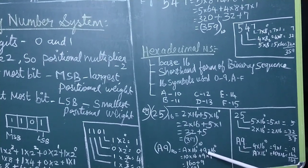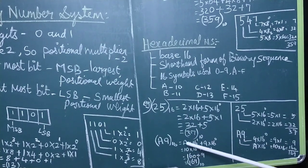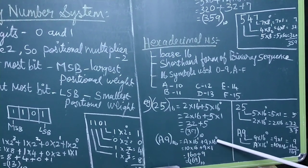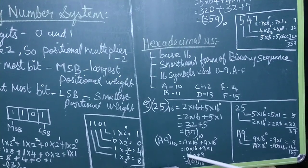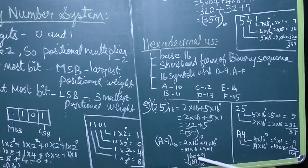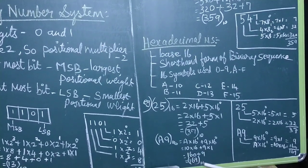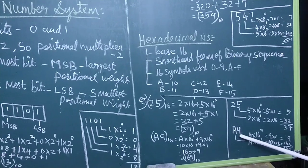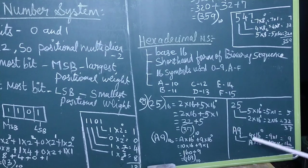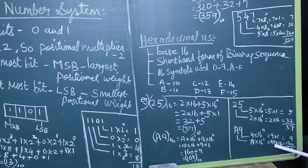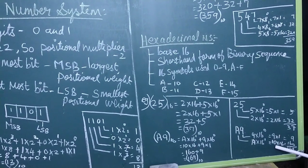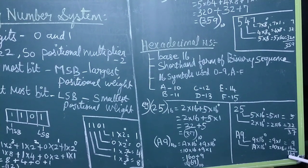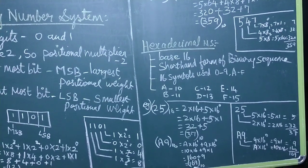Another example: hexadecimal number A9. A into 16 to the power 1 plus 9 into 16 to the power 0. The value of A is 10, so substitute: 10 into 16 plus 9 into 1 equals 160 plus 9 equals 169. So A9 in base 16 equals 169 in base 10.